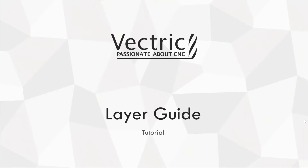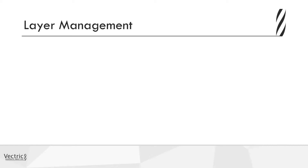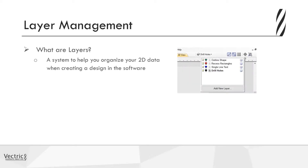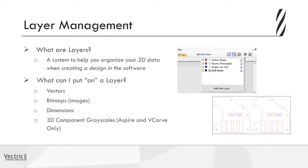So what are layers? Layers are a system to help you organize your 2D data and design in the software. The things you can typically put on a layer are vectors, bitmaps or images, dimensions, and 3D component grayscales.